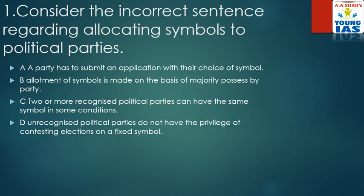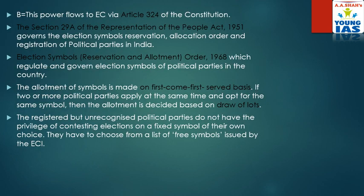Now the explanation. This power flows to the Election Commission via Article 324. Section 29A of the Representation of the People Act 1951 governs election symbol reservations. The Election Symbols Order 1968 regulates and governs election symbols of political parties in the country. The allotment of symbols is made on a first-come-first-serve basis. If two or more political parties apply at the same time and opt for the same symbol, then allotment is decided on the basis of a draw of lots.